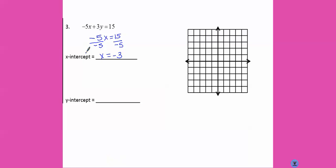For our y intercept. Ignore the x. We get 3y equals 15. Divide both sides by 3. We get that y equals 5.